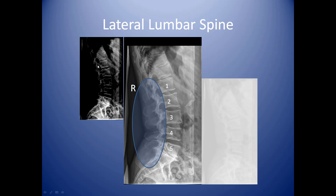An overexposed film will appear very dark — you can't see the spinous processes, which impedes your ability to count the vertebrae. You want a good range of black and white tones so the vertebrae are clearly visible. A properly exposed film is a good one to base your technique off of. An underexposed film will appear whited out or very grayed out, especially with heavier patients, so you need to make sure you penetrate through the body adequately.